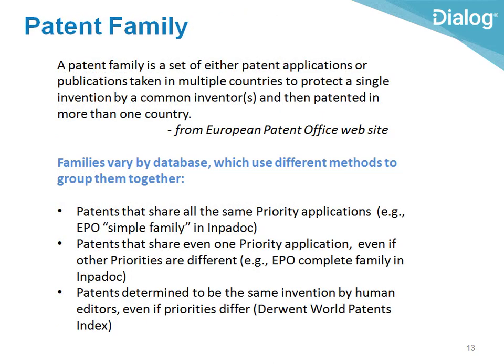I've mentioned patent families. Sometimes you'll want to see not just a particular patent, but also the whole group of patents related to it — either because they're essentially the same patent issued in multiple countries, or because they're more broadly related by some partial crossover of the applications they cite as priority. Patent families are created by different methods depending on the database, so this is something you can learn more about in the video Patent Databases on Dialog.